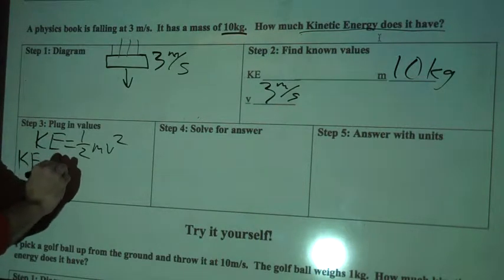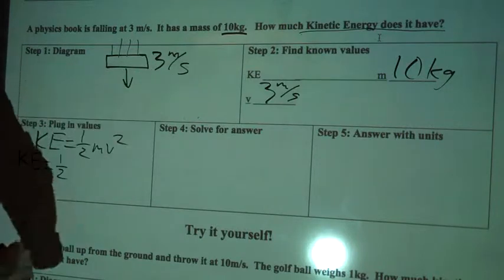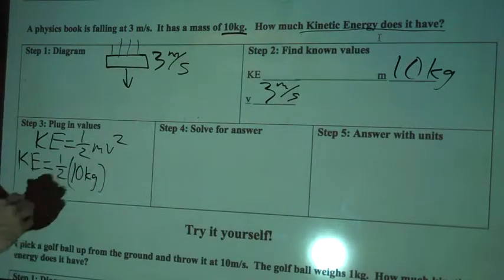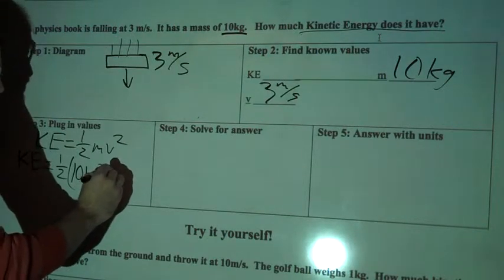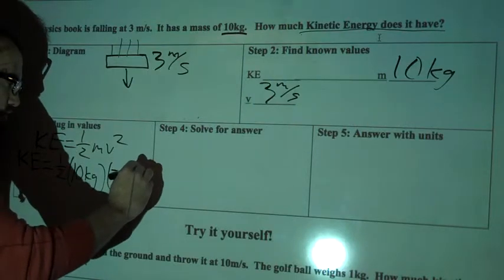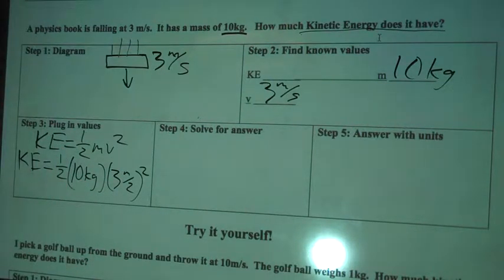So KE equals 1 half, and then my mass is 10 kilograms, and I'll put that in parentheses, and then my velocity is 3 meters per second, and you square that.